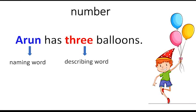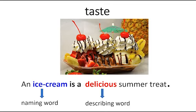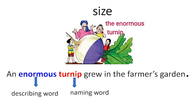Arun has three balloons — here Arun is the naming word and three is the describing word describing the number of balloons. Renu was happy to get a teddy bear as a gift — Renu is the naming word and happy is the describing word describing her feelings. An ice cream is a delicious summer treat — ice cream is the naming word and delicious describes the taste. An enormous turnip grew in the farmer's garden — turnip is the naming word and enormous is the describing word describing the size of the turnip.